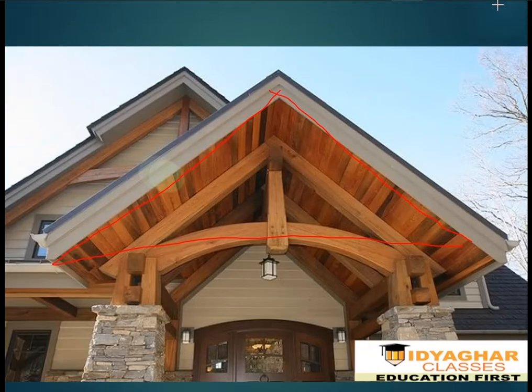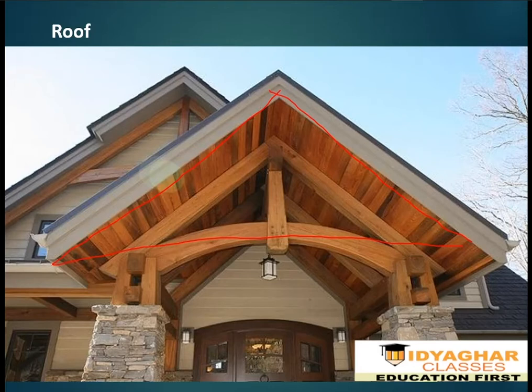Roof. The roofs of houses are made in a triangular shape because it doesn't let water or snow stand on the roof for a longer time.